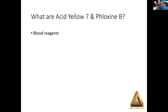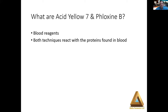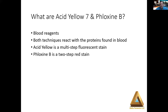With acid yellow 7 and phloxene B, again they're reacting with the proteins in blood — that's the theme of all of these reagents. Acid yellow 7 is a multi-step fluorescent stain, and I'll go into detail about that shortly. Phloxene B is also a two-step red stain with that pink-red development, similar to Hungarian red. These techniques differ from amido black and leukocrystal violet, which we call our traditional techniques.